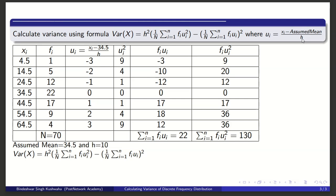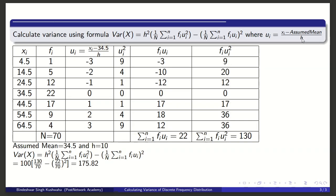And here, Σ(fi·ui) is 22. So if you plug the values, you will get 100 × [130/70 - (22/70)²]. And finally, that will come to 175.82. And this is the variance of this discrete frequency distribution.